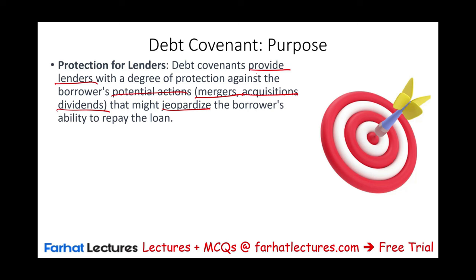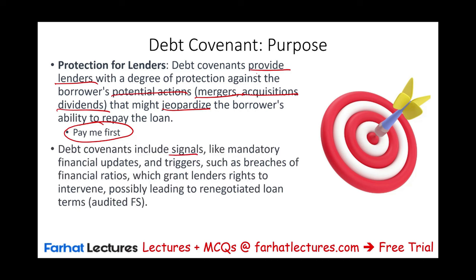We don't want them to go into mergers, buy other companies, or pay dividends — because they could jeopardize our position. If they spend that money somewhere else, it's not giving them the ability to pay back the loan plus interest. Simply put, we are going with the mentality of pay me first. Also, that covenant provides signals — indicators — that would help the lender react early on, such as mandatory financial updates and triggers like breaches of financial ratios.